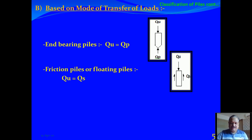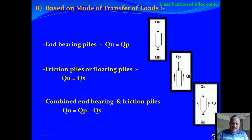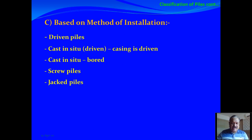When the pile does not reach the firm strata and floats in soft strata, it is called a friction pile or floating pile. The load-carrying capacity is derived from skin resistance between the adjoining soil and the pile shaft. When resistance is derived by the combined action of skin friction and end bearing, it is called a combined end-bearing and friction pile, and the load-bearing capacity equals Qp plus Qs.